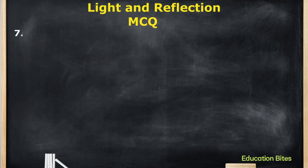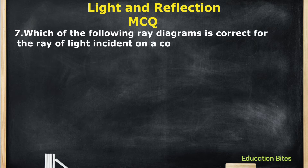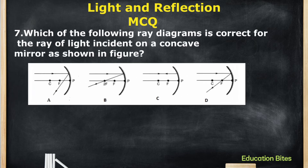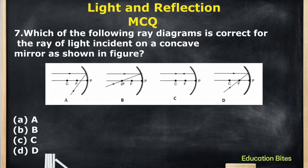The next question: Which of the following ray diagrams is correct for the ray of light incident on a concave mirror? When the ray is parallel to the principal axis, it is reflected through the focus. So the correct option is D.